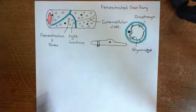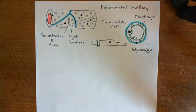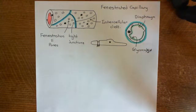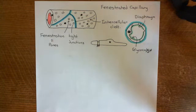The pore is too small for a platelet to fit through, so you don't need to worry about platelets getting out and activating the haemostatic pathway. But you do have to worry about the coagulation factors, and it's the diaphragm that stops them getting out — so you don't have to worry about activating the coagulation cascade. That's the structure of a fenestrated capillary.